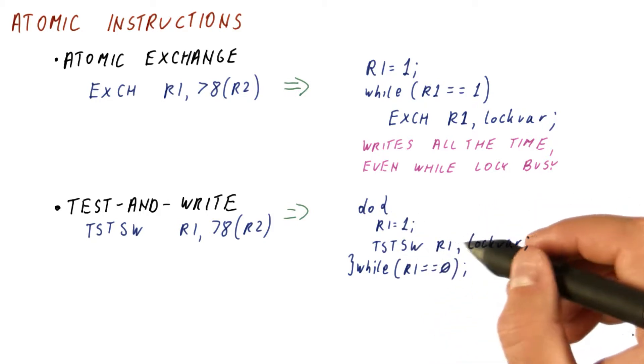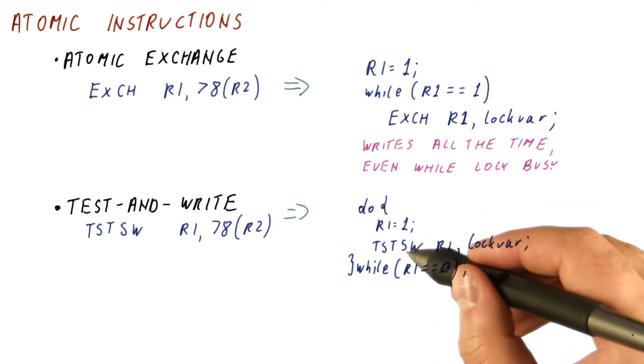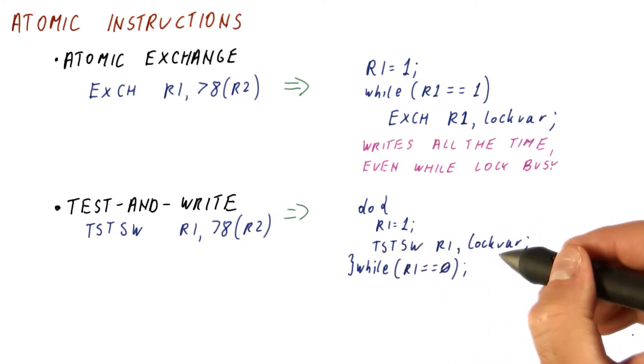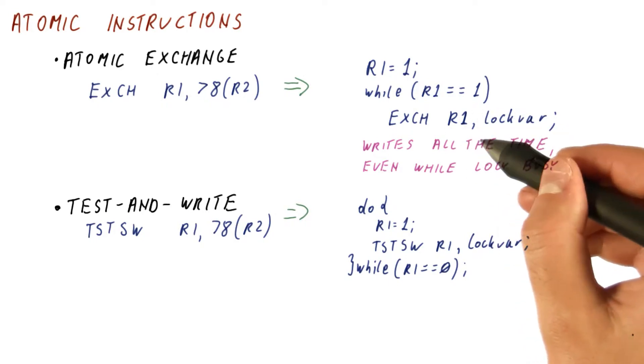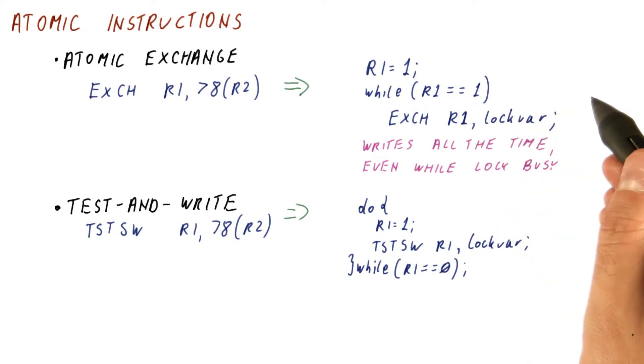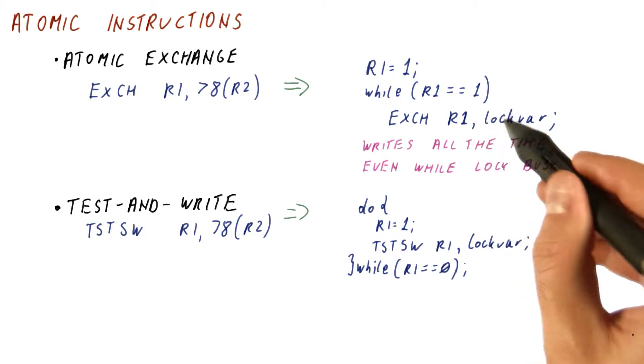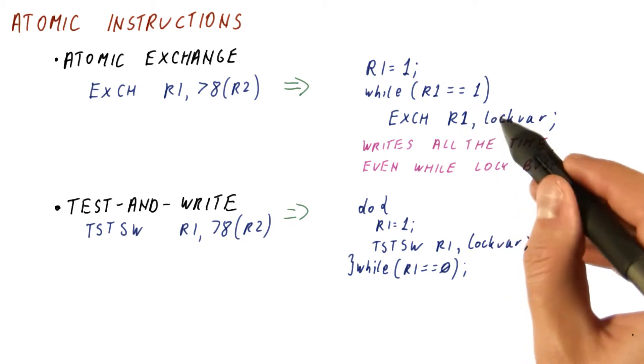But the idea is that as long as the lock is occupied, this test and store is only reading the lock variable. It is not writing to it. This is good because remember coherence. If you keep writing, you keep invalidating all the other copies. So everybody that is waiting keeps generating bus traffic because they're all trying to write and thus invalidating each other.